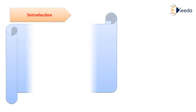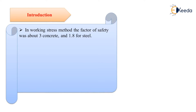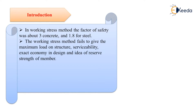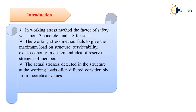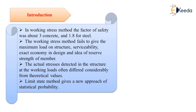In elastic design, that is the working stress method, the factor of safety was about 3 for concrete and 1.8 for steel. The working stress method fails to give the maximum load on the structure, exact economy in design, and an idea of the reserve strength of members. The actual stresses detected at working load often differed considerably from theoretical values, because the assumption that concrete is a perfectly elastic material is not correct — it is a more complex material. The limit state method is an entirely new concept based on statistical probability.